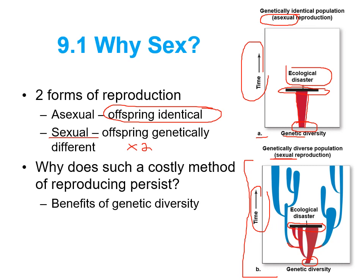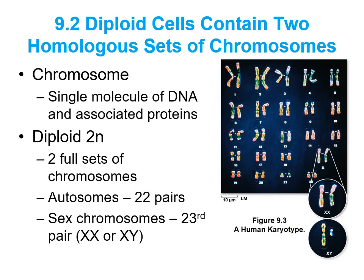Sexual reproduction is worth the time and effort because from a biological sense it gives us lots of genetic variety. All our DNA is coiled up tightly in the form of chromosomes, and as humans we have 46 chromosomes, or 23 pairs. We can say 23 pairs because you get one from mom and one from dad.